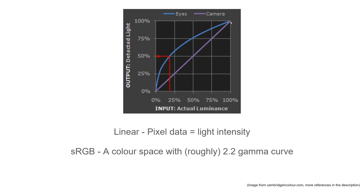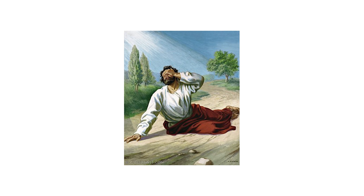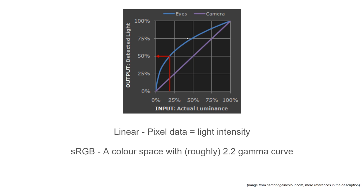sRGB on the other hand is a colour space which most online images are encoded with, and it is how monitors and TVs display images. It has a gamma of roughly 2.2, which is how our eyes and brain perceive light. If we look on this graph you can see this gamma 2.2 curve and 0.5 does not equate to 0.5 - it's something like 0.218. Our eyes actually perceive small changes in low light the same way they perceive big changes in bright light. So 50% of the image stores only about 20% of the brightness, whereas the top 25% of the image stores the top 50% of the brightness - the data is not stored linearly.